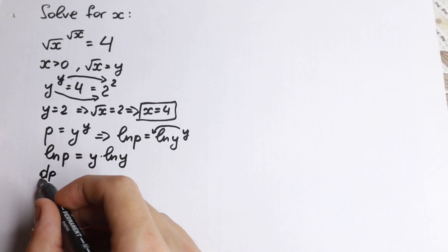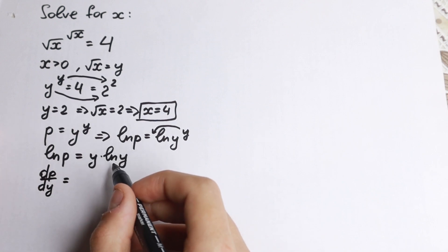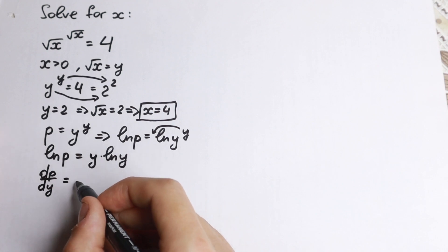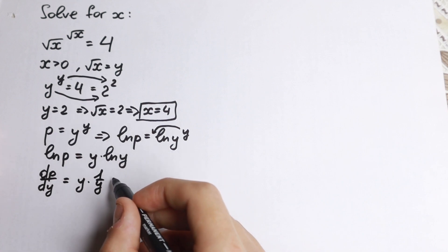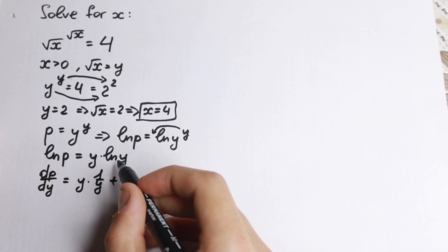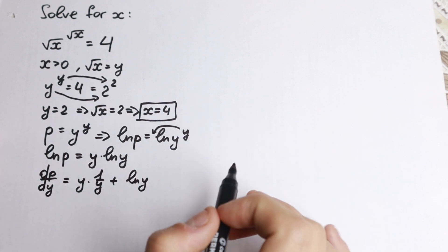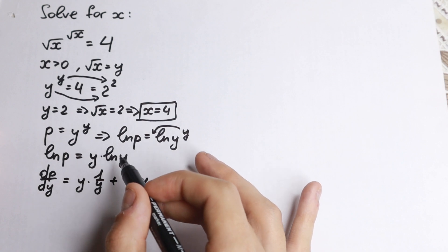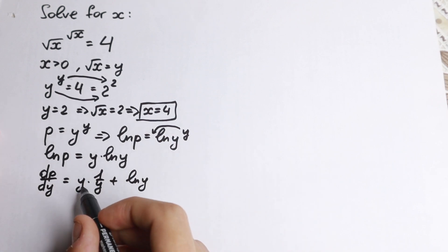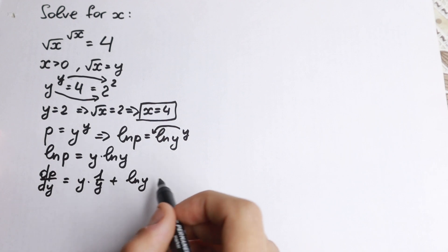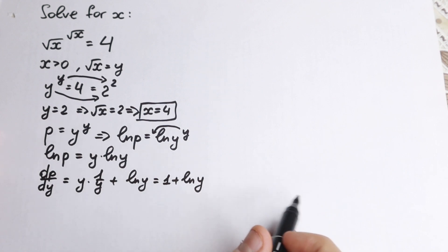Now let's find the derivative dp over dy. Since the right-hand side is a product, we apply the product rule: the derivative of y times ln(y) is y times (1/y) plus ln(y) times 1, which simplifies to 1 plus ln(y). So the derivative of ln(p) is 1 plus ln(y).